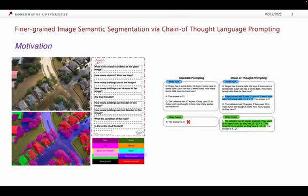Compared to standard prompting, Chain-of-Thought prompting in natural language understanding makes sentences clearer and gives much better answers. So we focus on fine-grained semantic segmentation using Chain-of-Thought prompting.